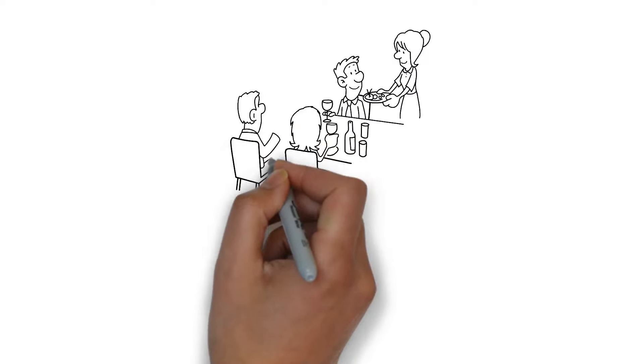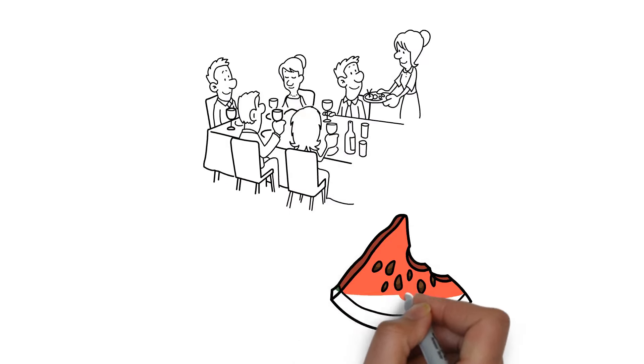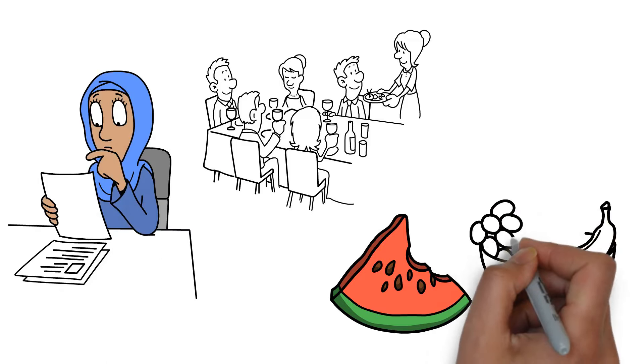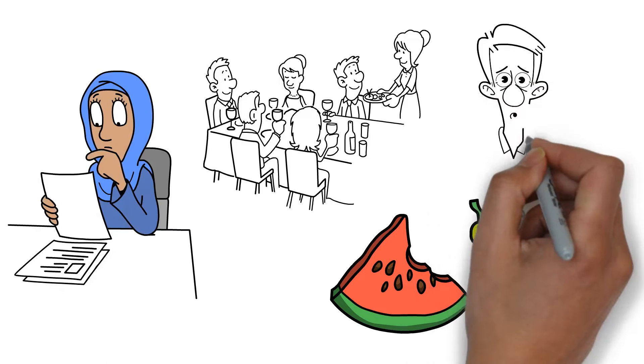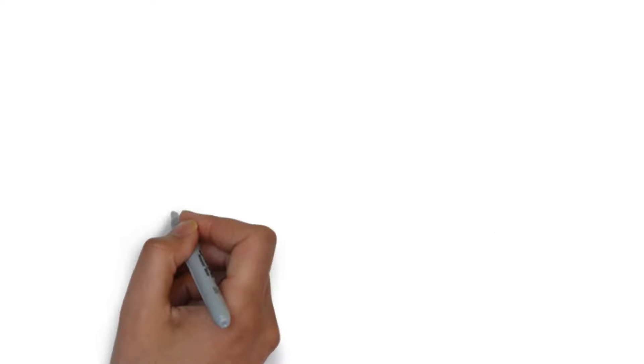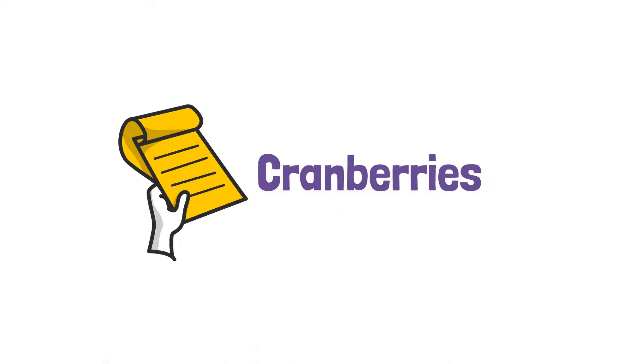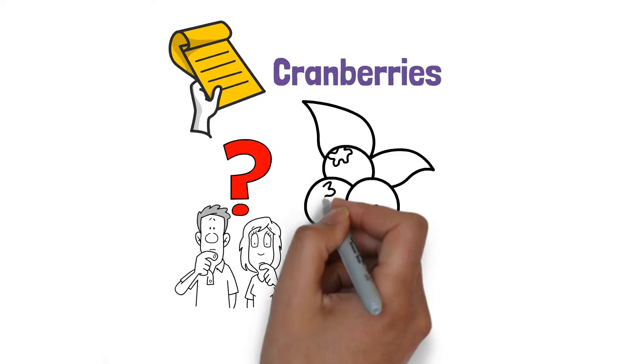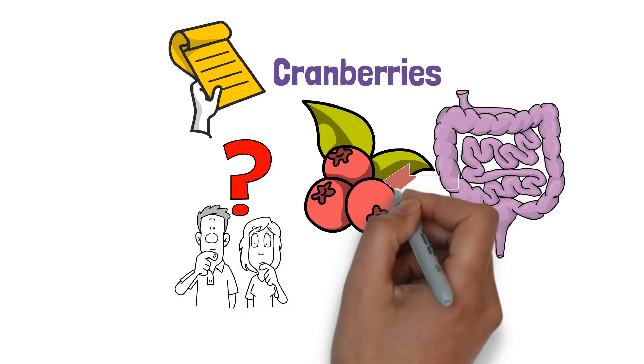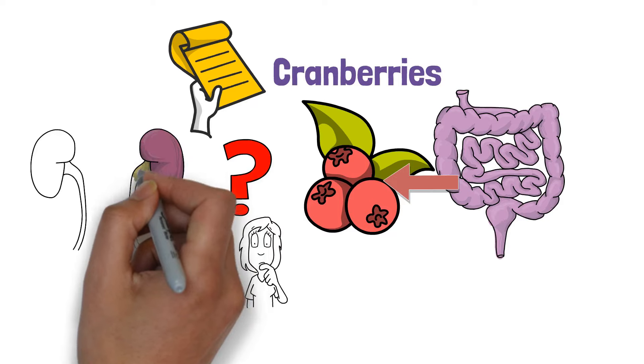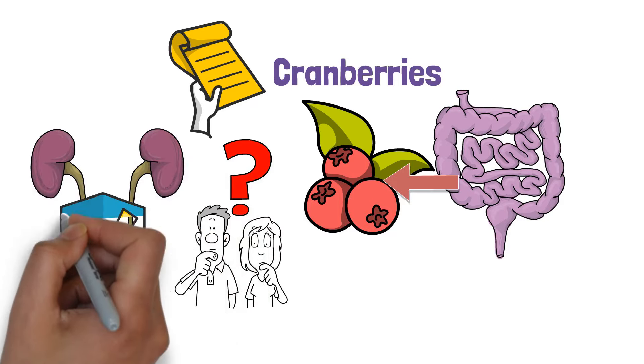As we savor the refreshing taste and benefits of watermelon, let's stay curious and ready to discover more kidney friendly fruits. What's next might just surprise you. Fruit 2 Cranberries. Did you know cranberries are like the bodyguards of your urinary system? Yep, these tiny tart powerhouses are on the front lines protecting your kidneys.